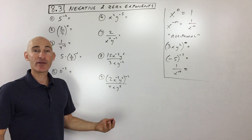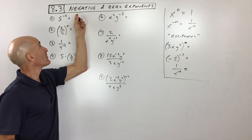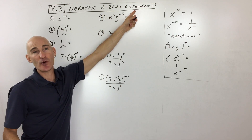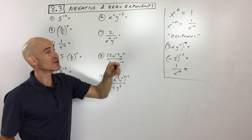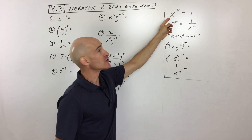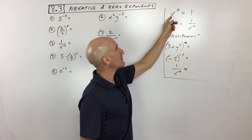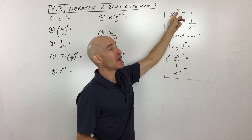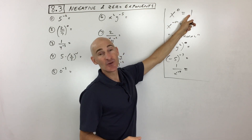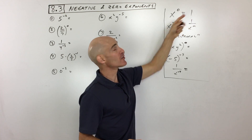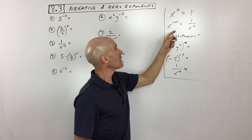Section 8.3 — we're going to talk about negative and zero exponents. Let's look at a couple properties. Whenever you have something raised to the zero power, it always equals one. So x to the zero equals one.